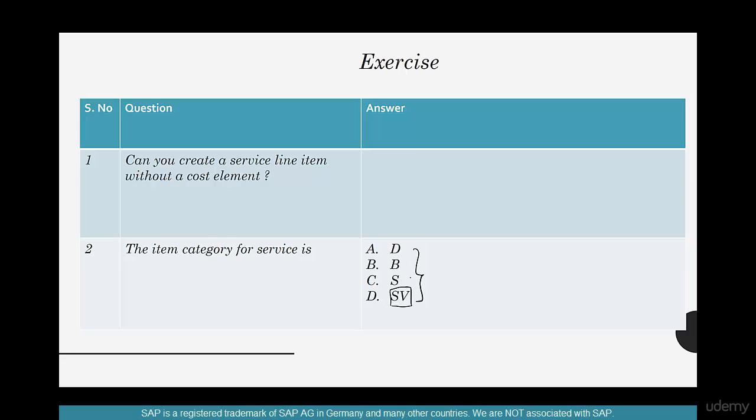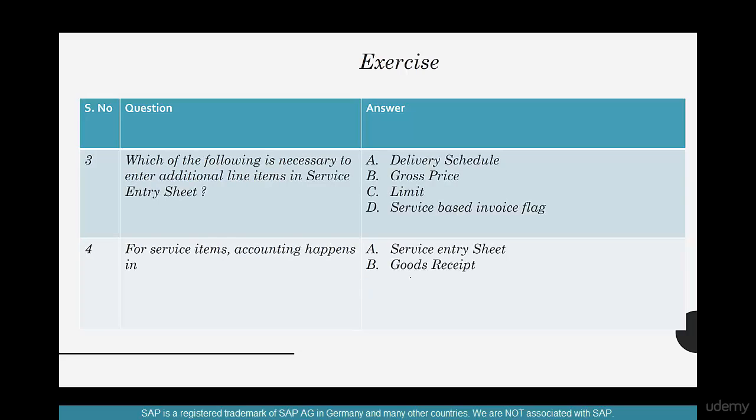The third question is which of the following is necessary to enter additional line items in service entry sheet? Well, in the service entry sheet when we wanted to add additional line items, something has to be set at the line item level in the purchase order. Which of these had to be set?